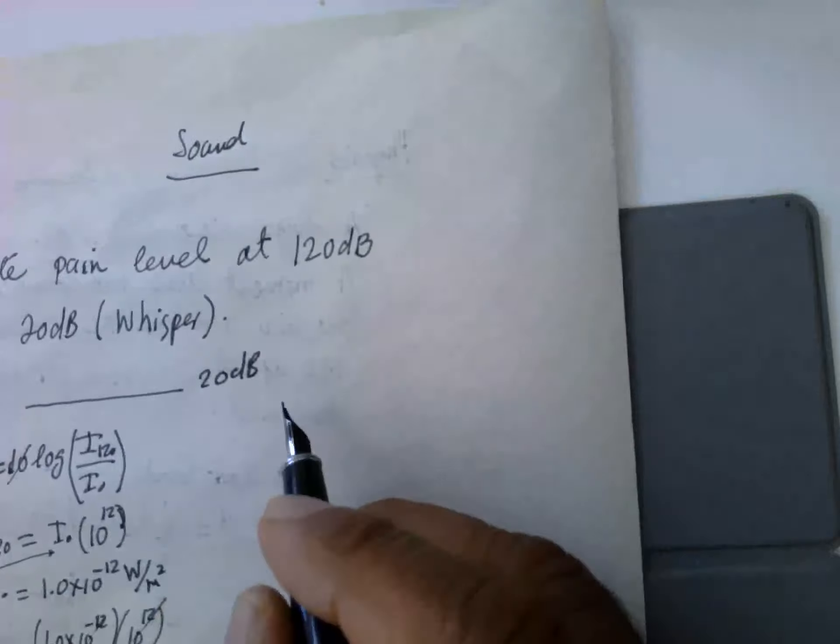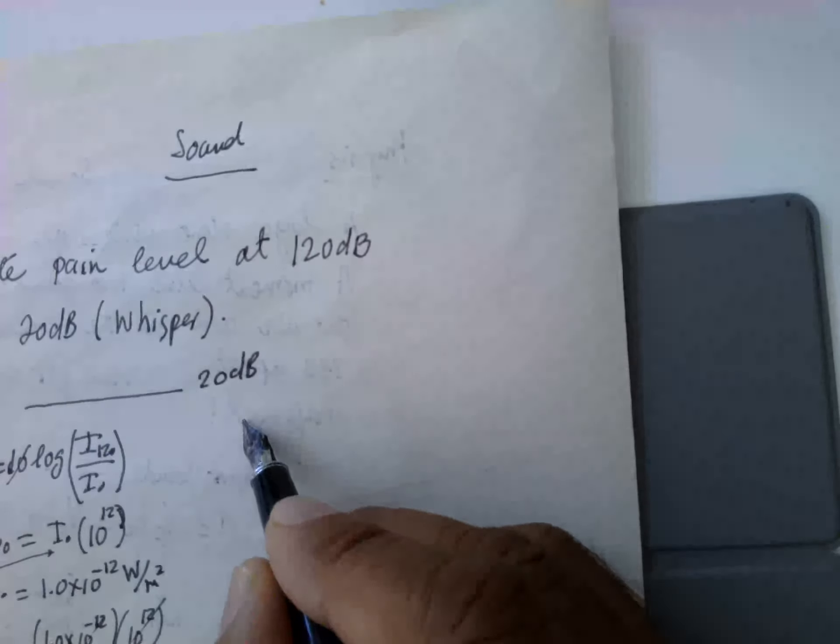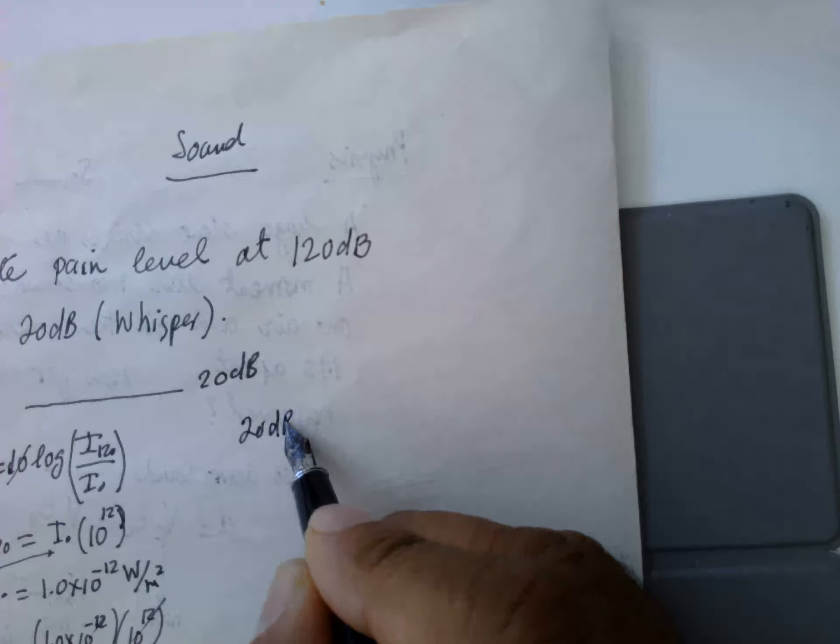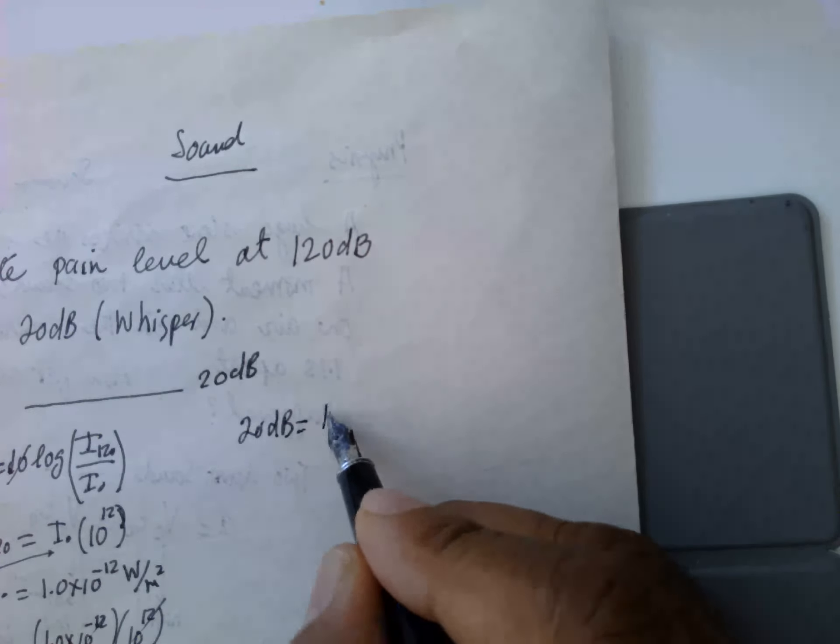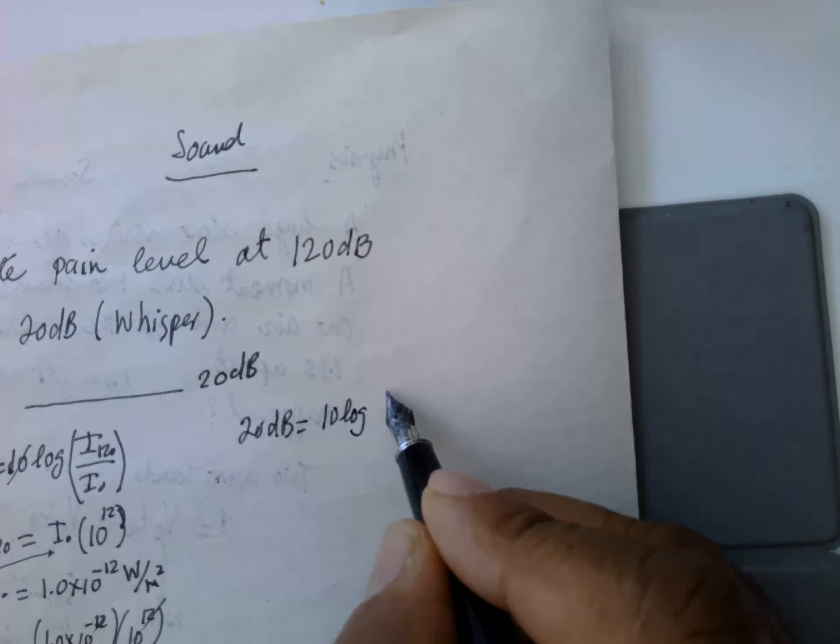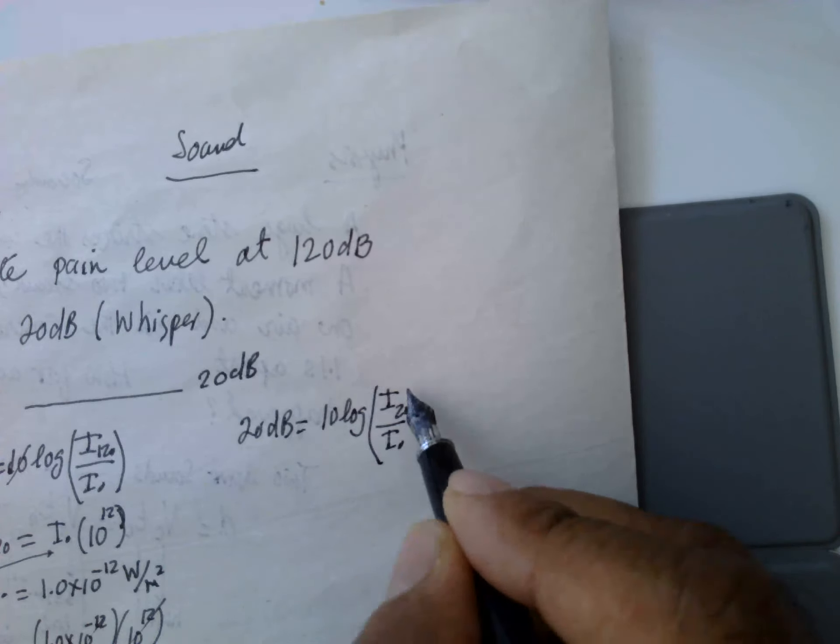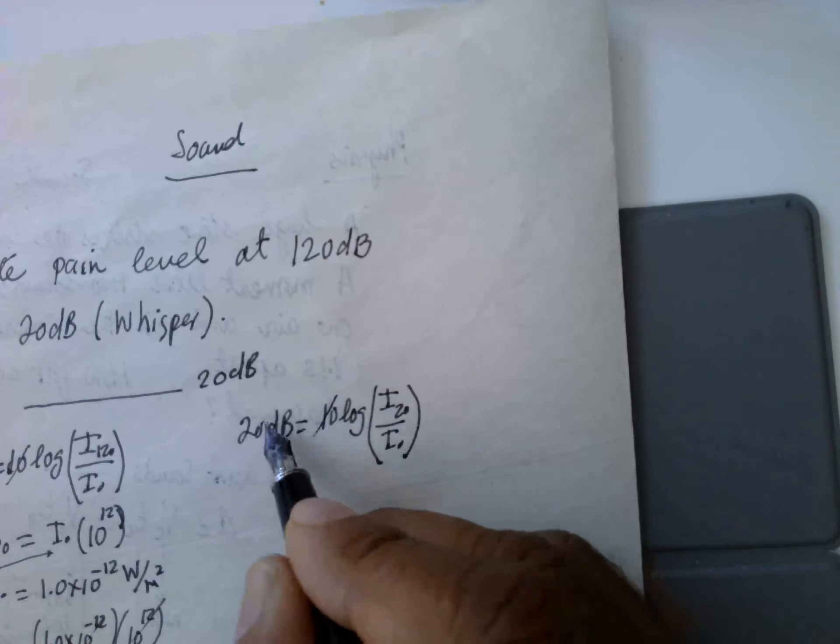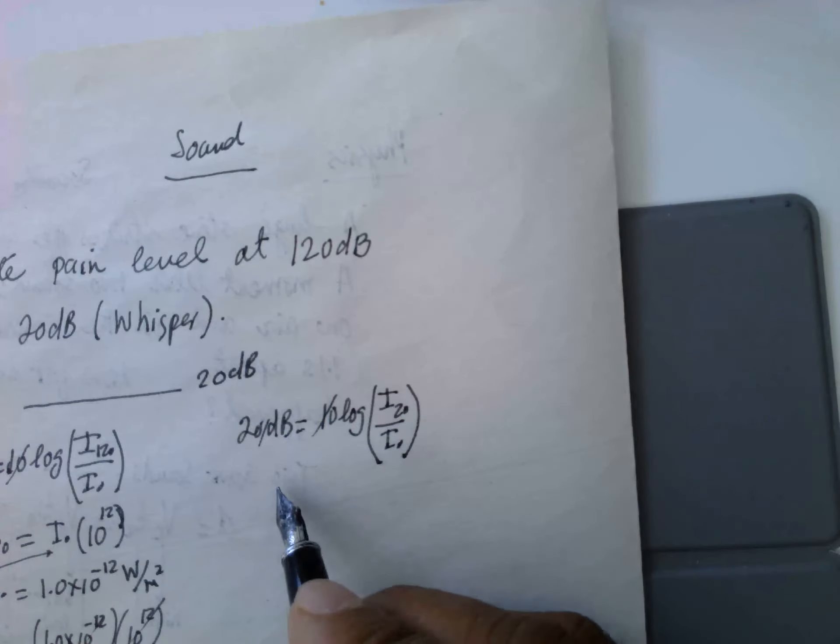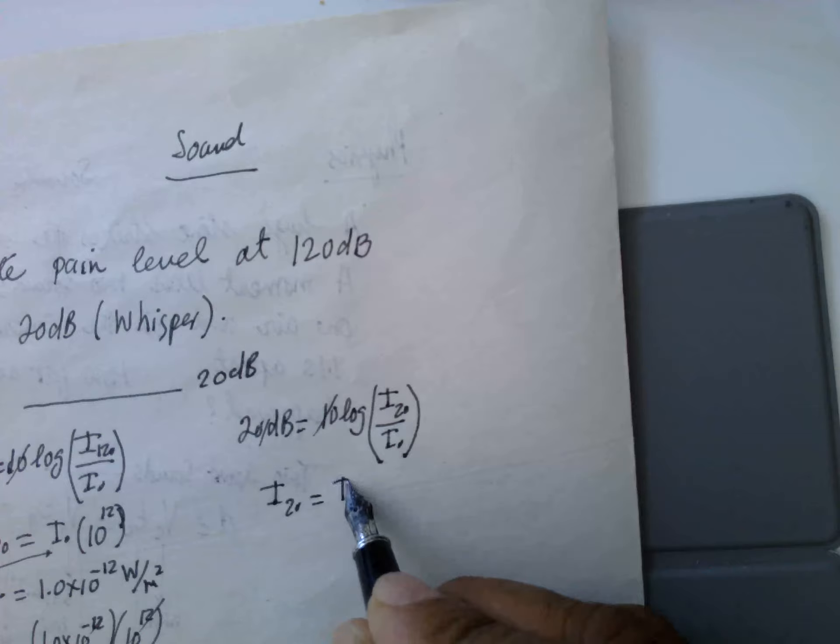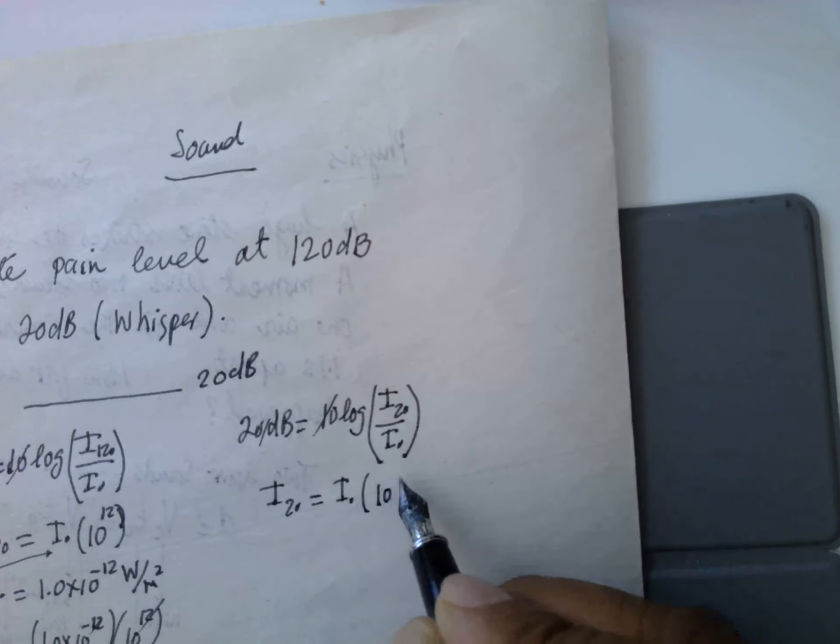More than a jet engine. So this is 20 dB is equal to 10 log of I₂₀ over I₀. So this is equal to 2, so I₂₀ dB is equal to I₀ into 10 to the power 2.